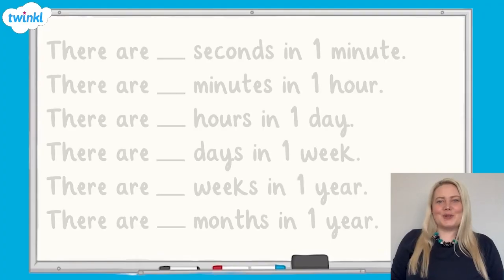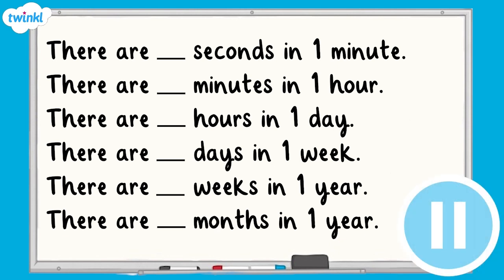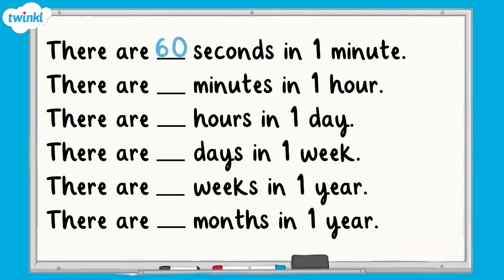Can you complete the missing spaces in these sentences? There are 60 seconds in one minute, 60 minutes in one hour, and 24 hours in one day. There are 7 days in one week and 52 weeks in one year. There are 12 months in one year.